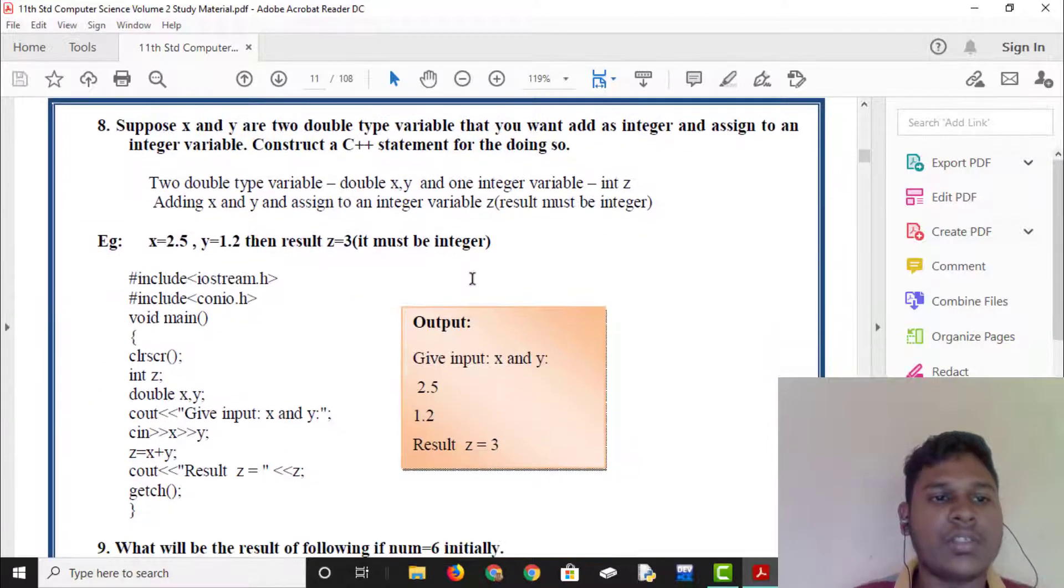Suppose x and y are two double type variables that you want, add as integer and assign to an integer variable, construct a C++ statement for doing so. Let's do two data variables, double x y and one integer variable, int z, add x and y and assign to the z.